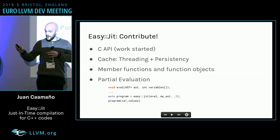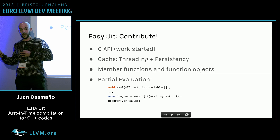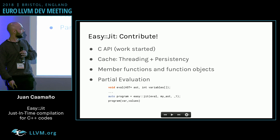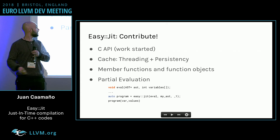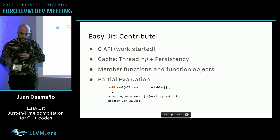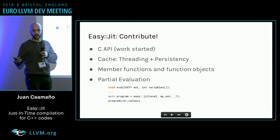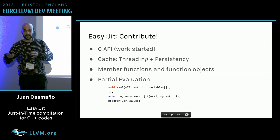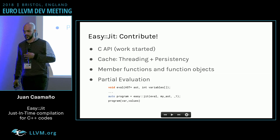There's a lot of work in progress, so if you want to contribute, please do. I'm working on the C API, which is horrible. If you're good at writing C++ libraries, the cache support needs threading and persistency. The final objective of the library is to perform partial evaluation — for example, given an interpreter function and an AST, generate code specialized for that particular AST. Thanks.